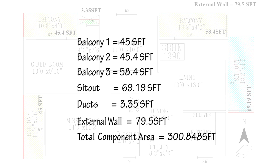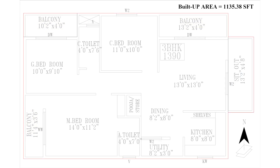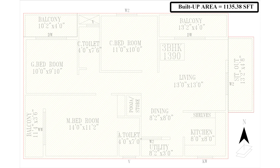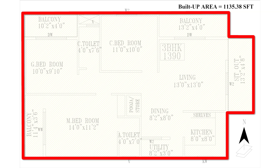Adding up all the areas including the external walls, the total sum of additional components comes to 300.848 square feet. We add these component areas to the carpet area, and the value we get is termed as Built-up Area — that is 1135.38 square feet.